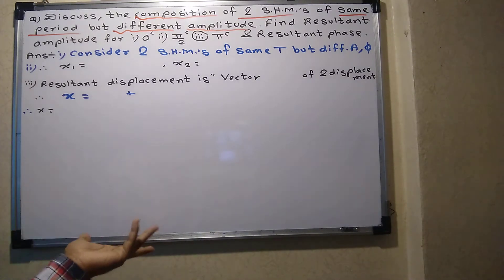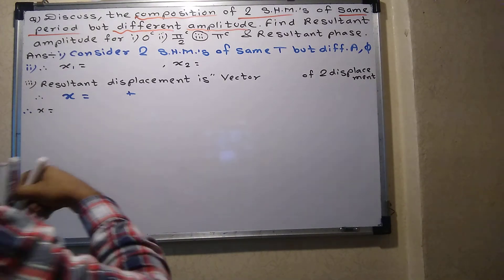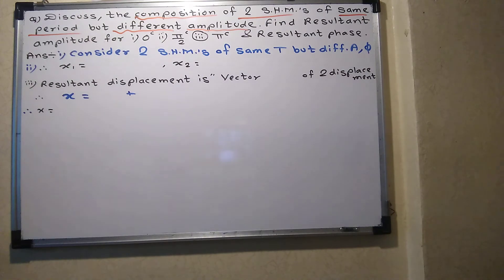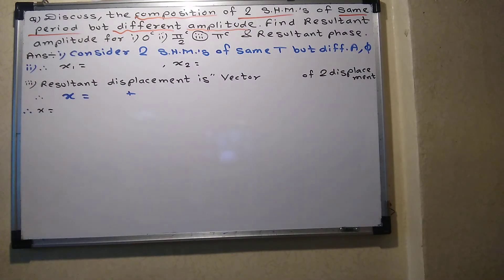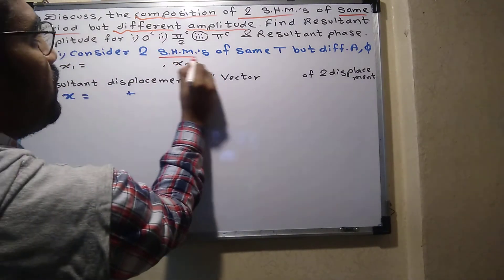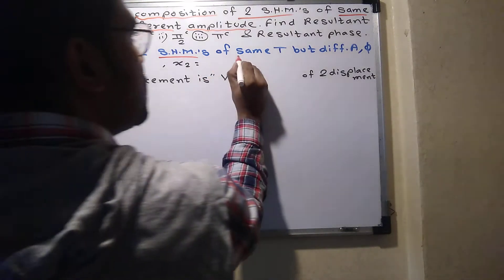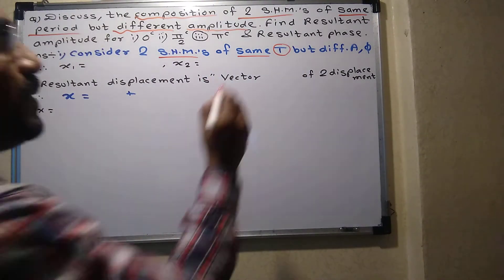It is a really easy derivation. The main thing is: first, we have to show that the resultant SHM is also SHM. That is what discussing the composition means — we have to show the resultant is also SHM. So let us consider two SHMs of the same period T.